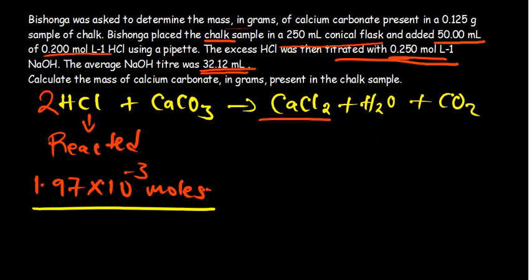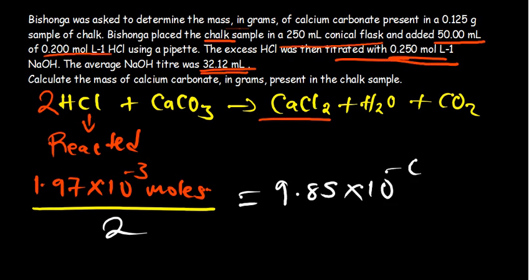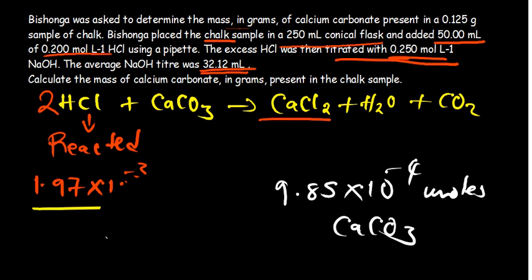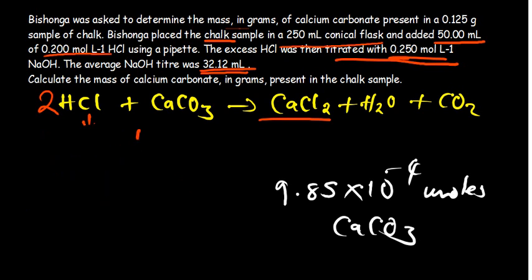Dividing by 2, we get 9.85 × 10⁻⁴ moles. These are the number of moles of calcium carbonate that had reacted in this reaction. So we used back titration to find the number of moles of calcium carbonate.